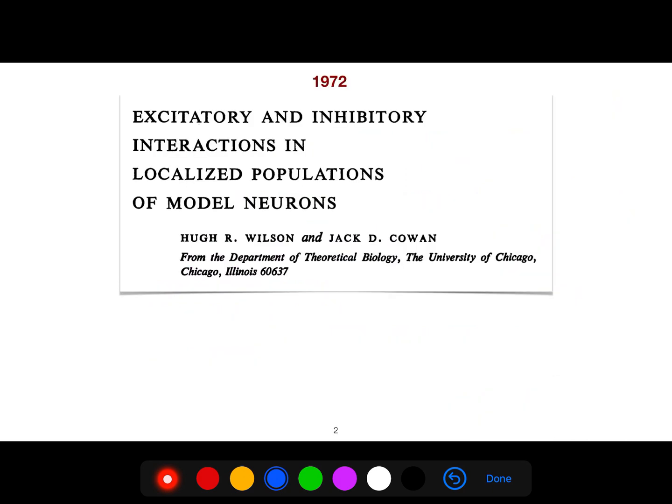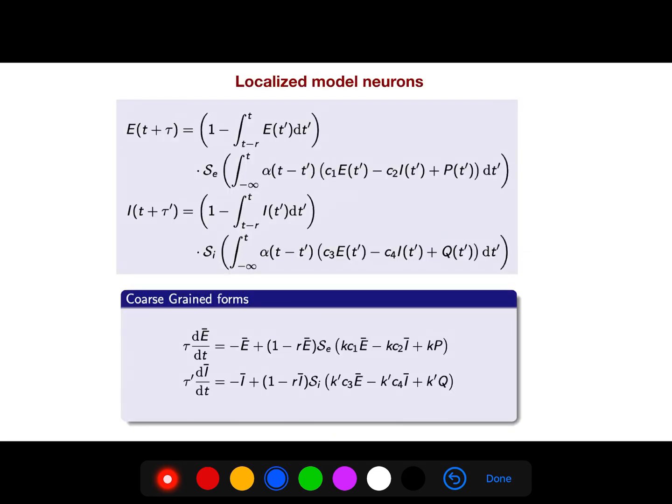I want to explain this important article from 1972. This is very influential and seminal work. They model excitatory neurons as E. For example, at time T plus tau, if we just go for one time step, we will see that this is the model, and this is for inhibitory.